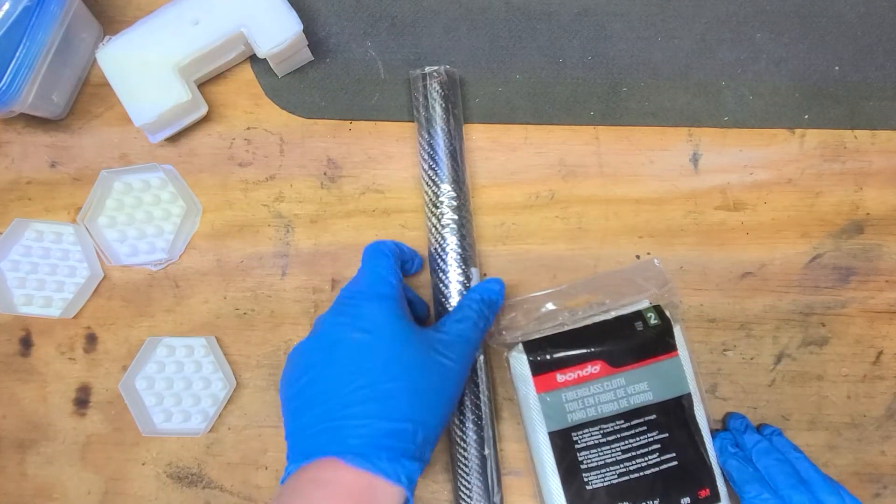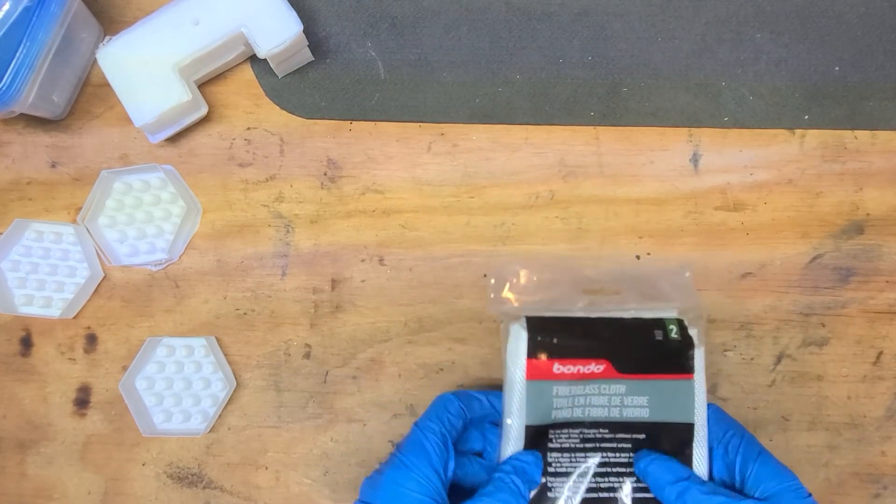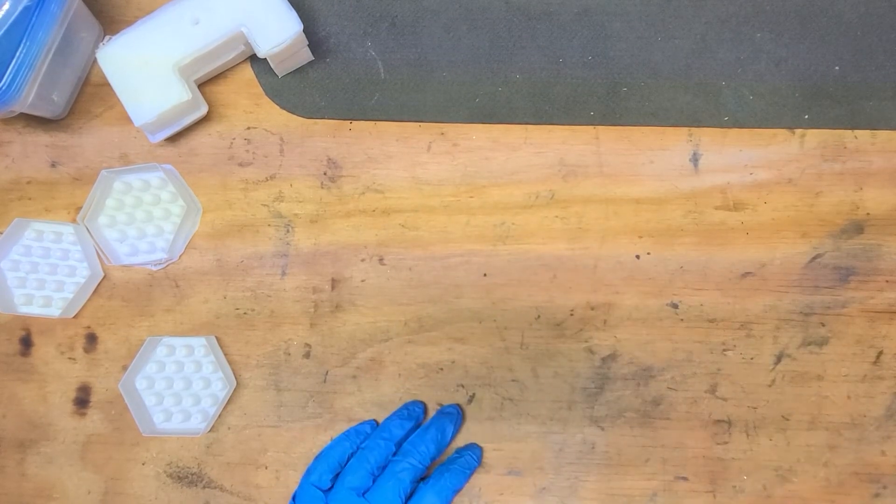So get the mold, put the barrel liner in. You could use some glue, wrap it in carbon fiber, wrap it in fiberglass, make a mix of this stuff, this two-part epoxy resin.